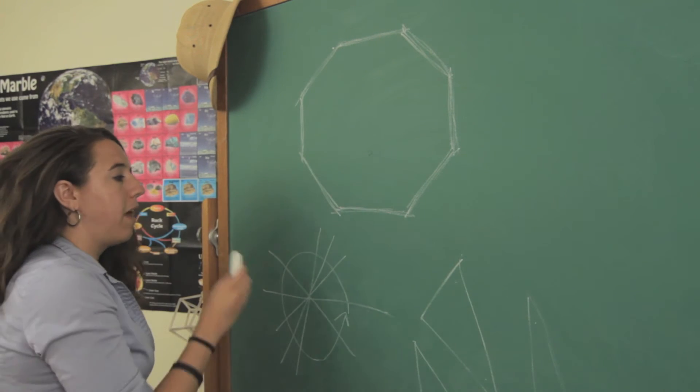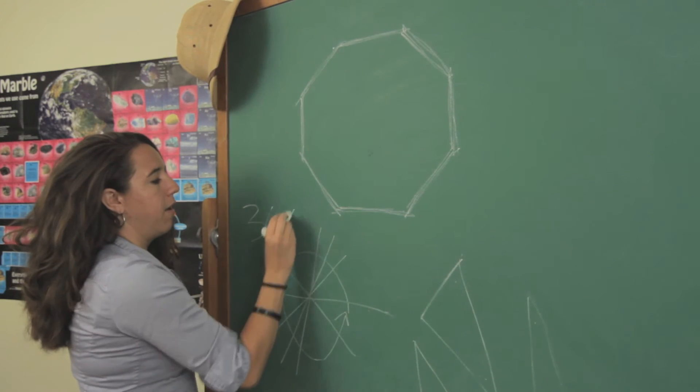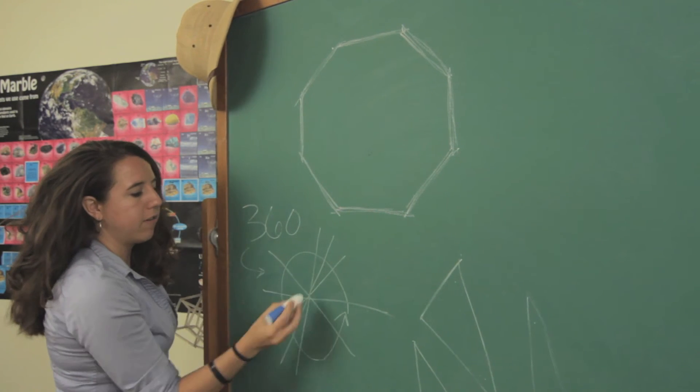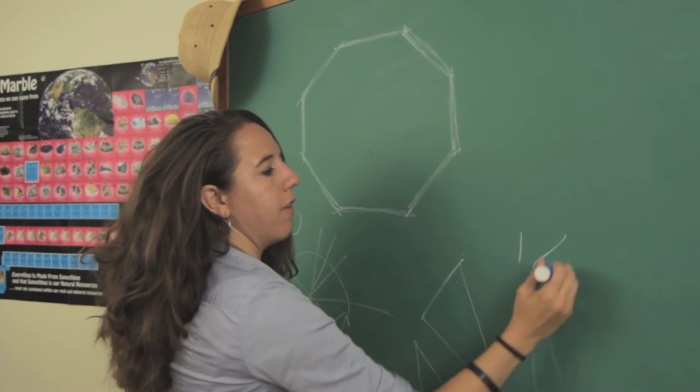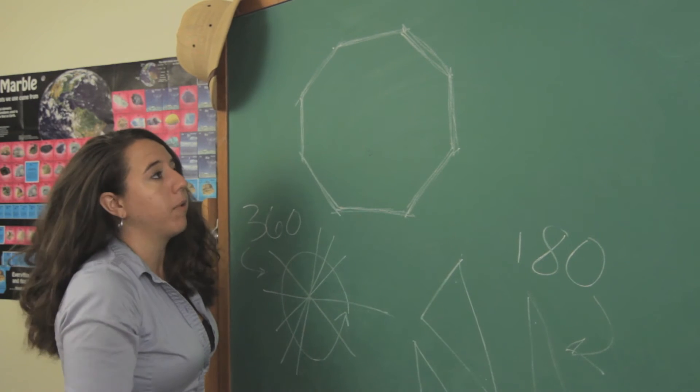Let's remind ourselves how many degrees each of these encompasses. Once again, this is 360 degrees always, and this is 180 degrees always, as far as all of the angles added up goes.